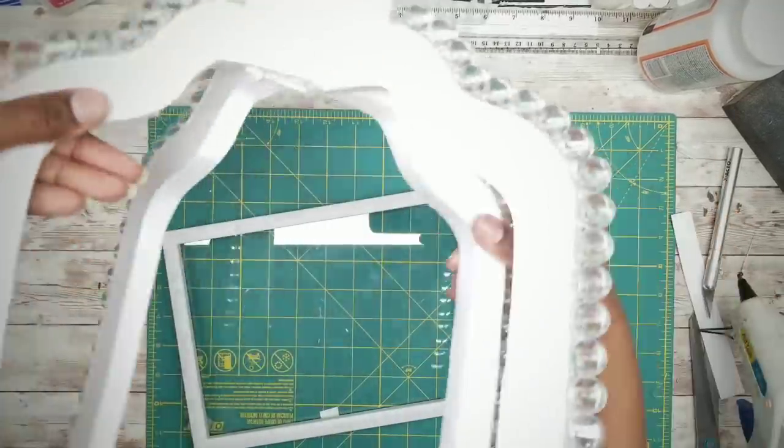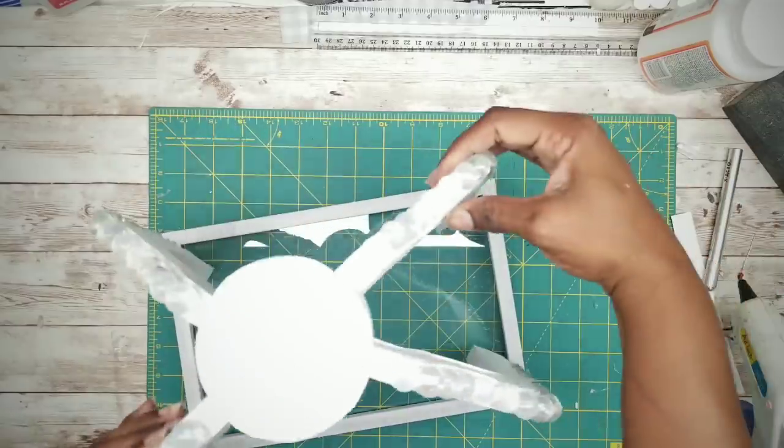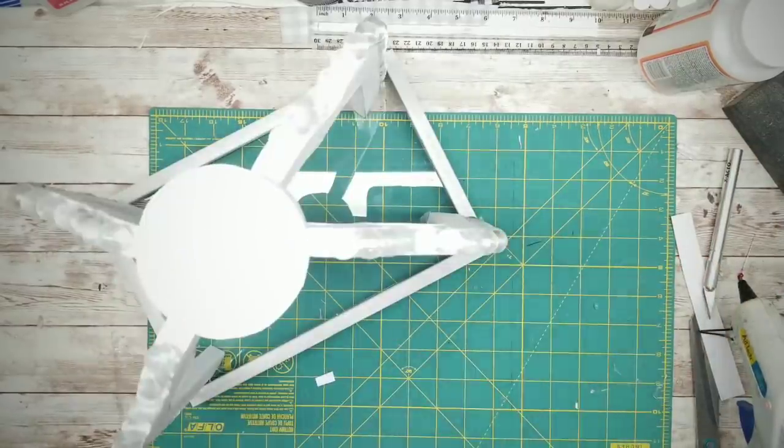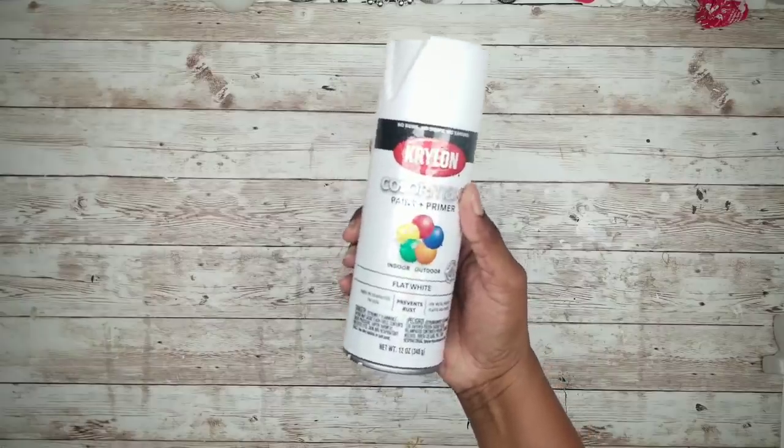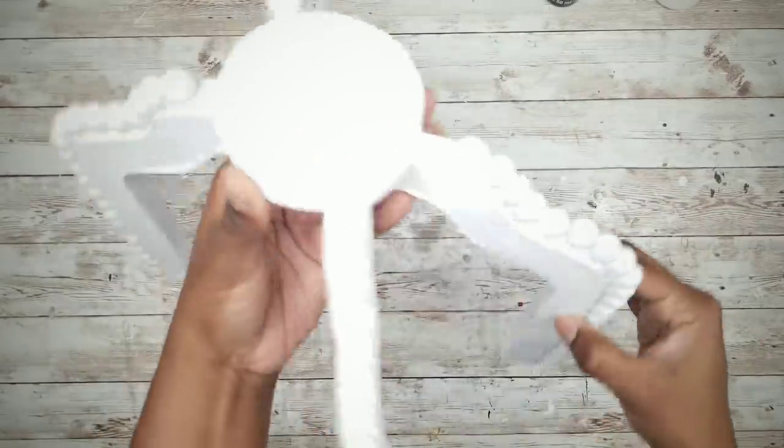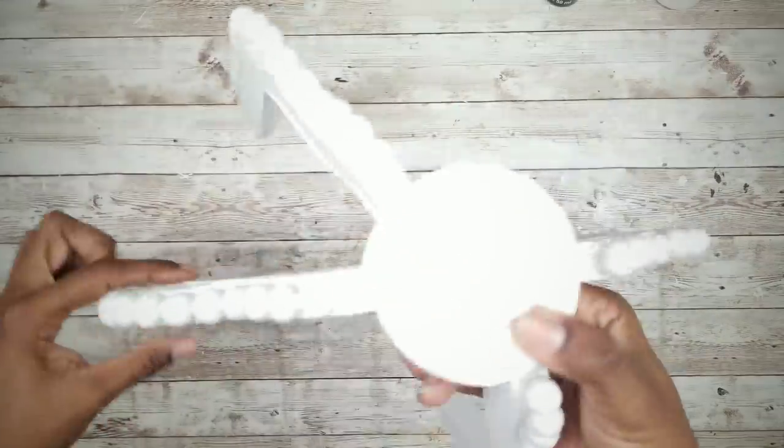Now that everything is nice and dry, we can go ahead and paint. I will be using this flat white spray paint by Krylon, applying two to three coats to the beads and the ball on top. And here it is all nice and painted and dry.